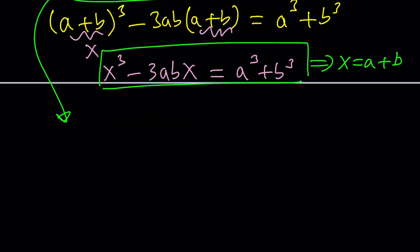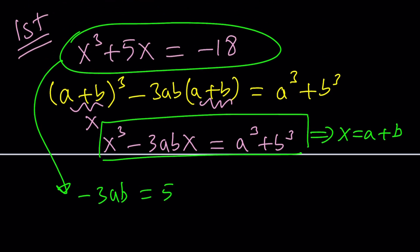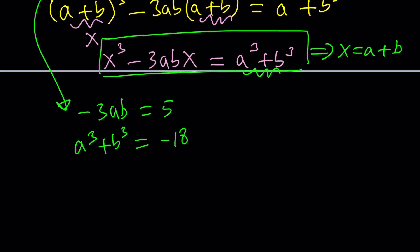Notice that the coefficient of x is -3ab which is 5 in the original problem and the constant term which happens to be this x is -18. So a³ + b³ is -18.